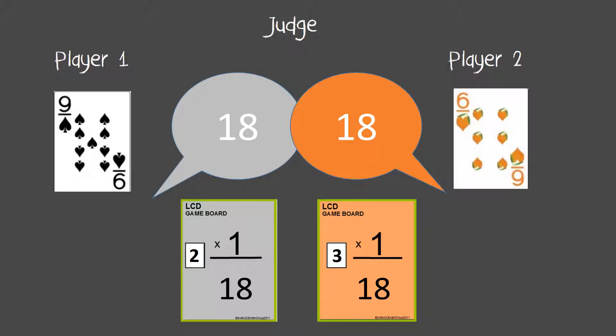So 18 divided by 6 is 3. 18 divided by 9 is 2. So I'm going to have to multiply that side by 2 and this other game board by 3. So it's getting kids to understand least common denominator and then also what they're going to have to multiply by in order to get an equivalent fraction.